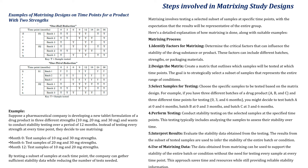This saves valuable time and resources while providing reliable stability information. For example, suppose a pharmaceutical company is developing a new tablet formulation in three different strengths — 10mg, 20mg and 30mg — and wants to conduct stability testing over 12 months. Instead of testing every strength at every time point, they decide to use the matrixing method. At month 0, samples of 10mg and 30mg strengths are analyzed; at month 6, samples of 20mg and 30mg are tested; and at month 12, samples of 10mg and 20mg strengths are analyzed. By testing a subset of samples at each time point, the company can gather sufficient stability data while reducing the number of tests needed.